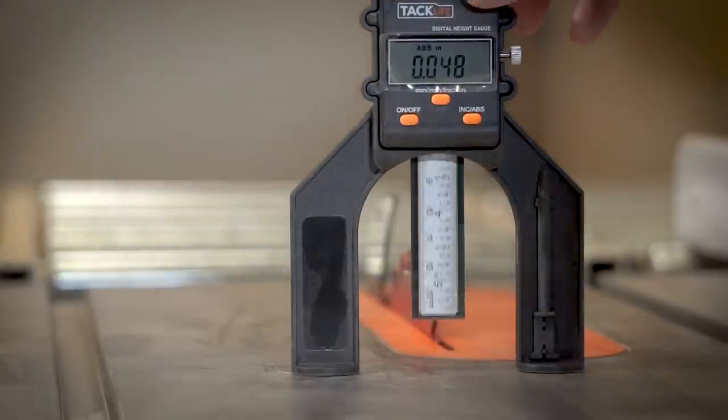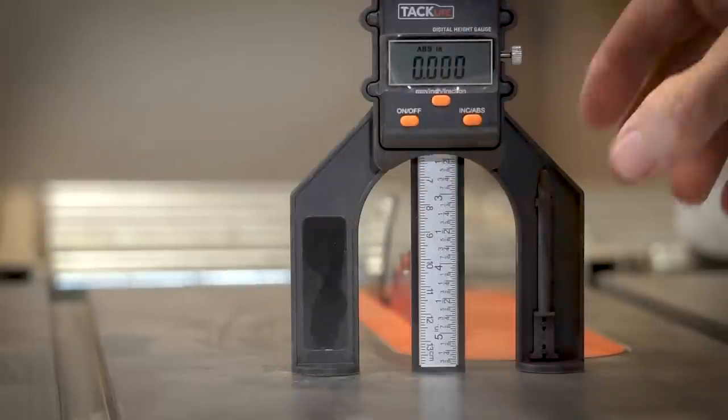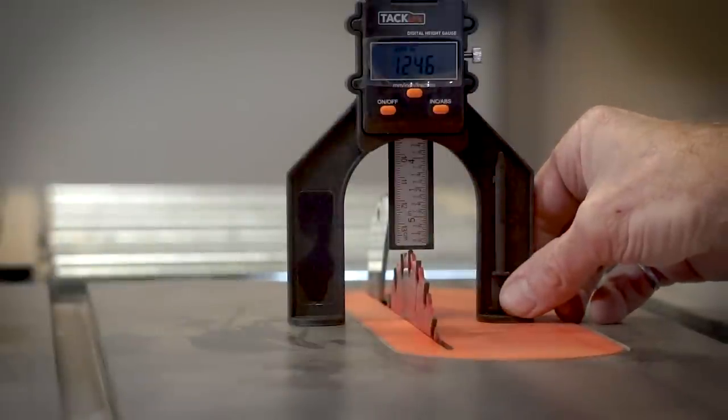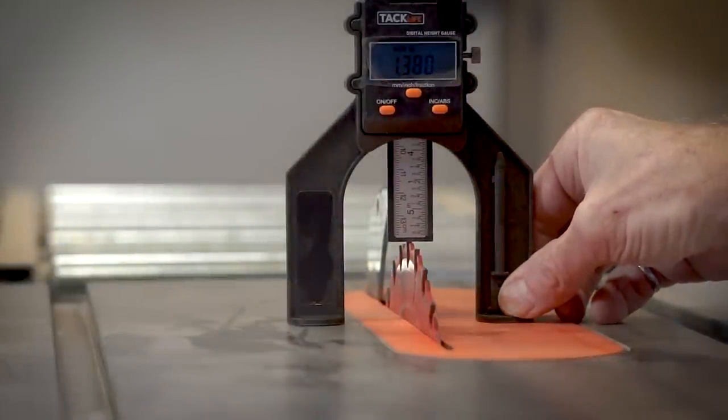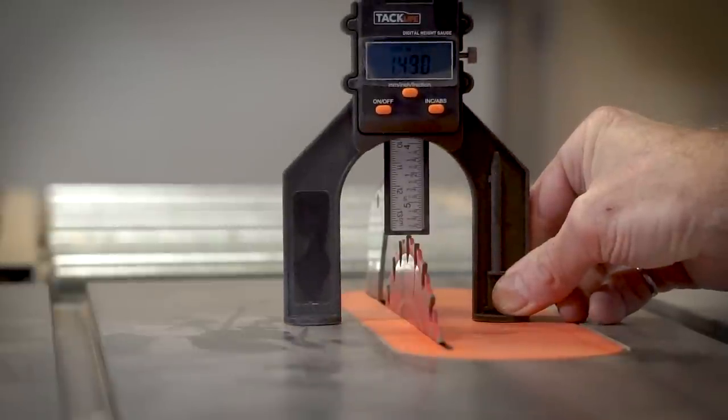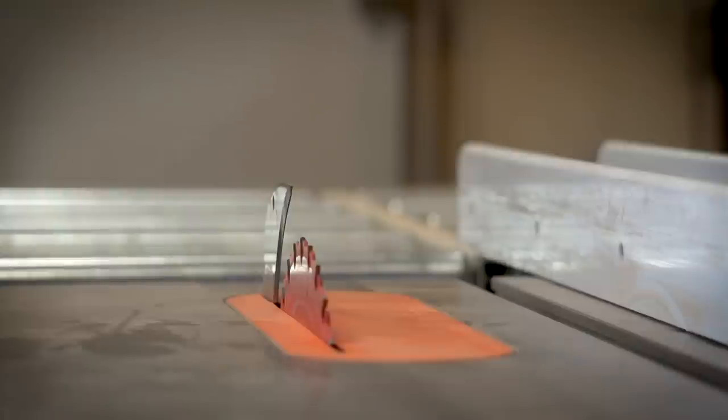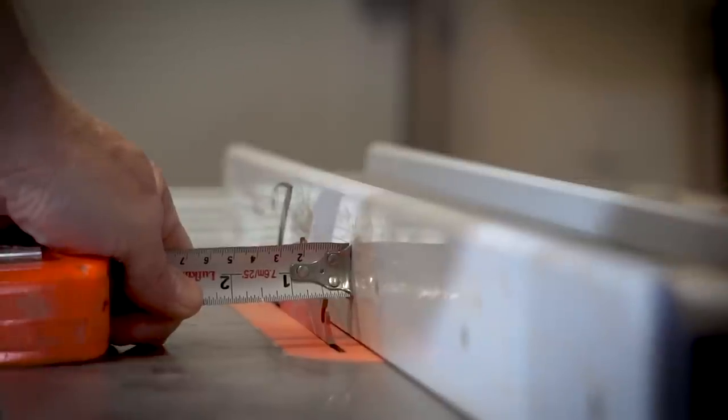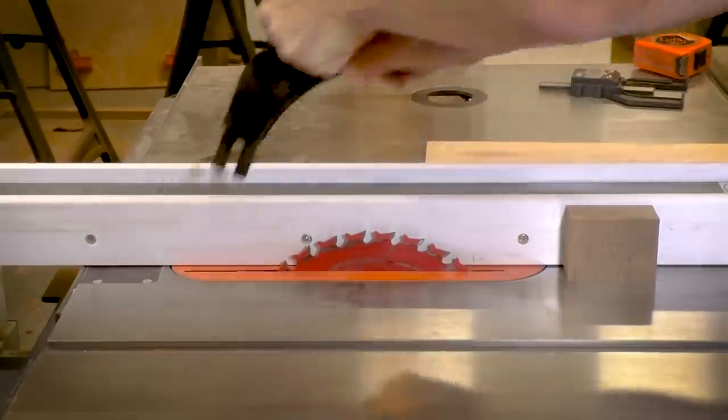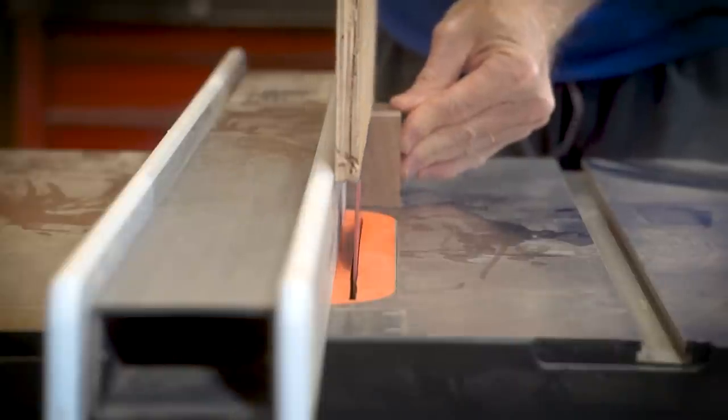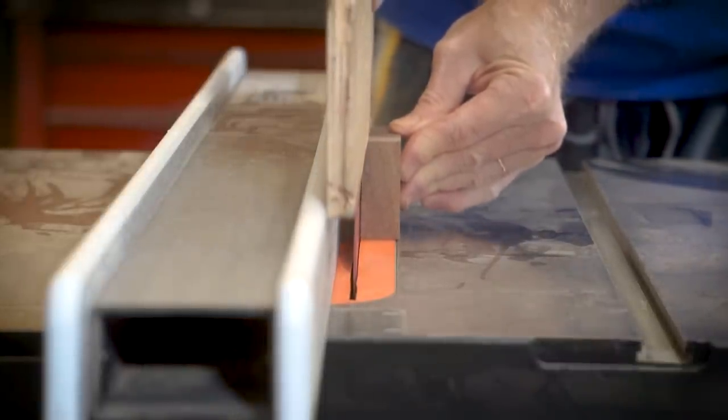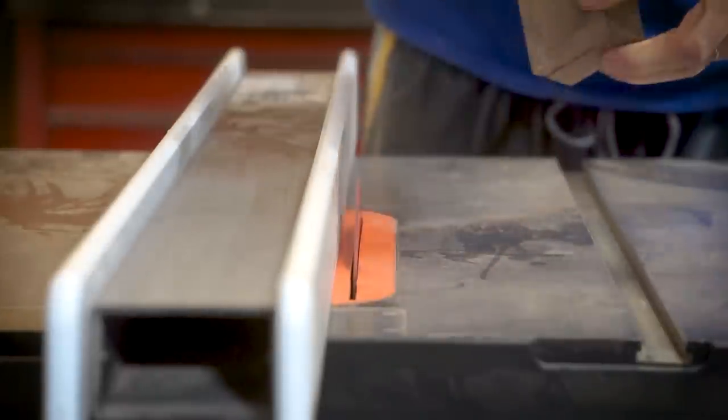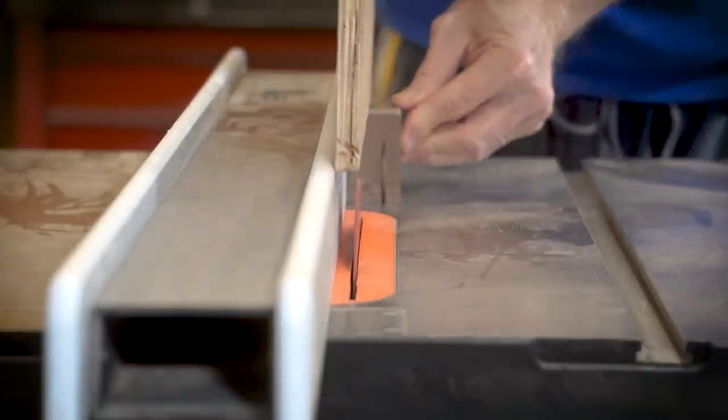I'll use my Tac Life depth gauge to get the height of the blade. I want to come up to about one and a half inches. Nothing here has to be that precise. I wanted to get the blade about 0.45 inches away from the fence, measured to the outside of the blade, about 7/16ths of an inch. I'm not cutting all the way through this piece so I had to remove my riving knife. I'm cutting an equal amount from each side and that will leave a piece centered in the middle.